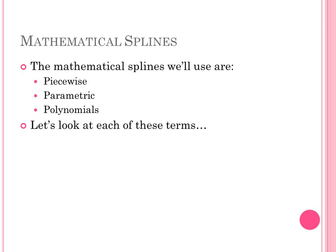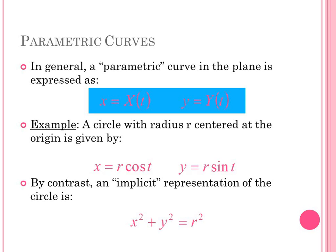How are splines represented mathematically? The mathematical splines we use are piecewise parametric polynomial curves. Starting with parametric: a parametric curve in the plane is expressed as x = x(t) and y = y(t). For example, a circle can be represented in parametric form as x = r·cos(t) and y = r·sin(t), or as an implicit representation x² + y² = r². Both represent a circle, but in computer graphics spline curves are represented with parametric equations in the form x = x(t) and y = y(t).